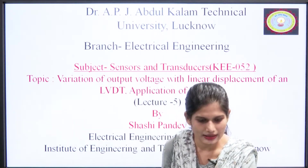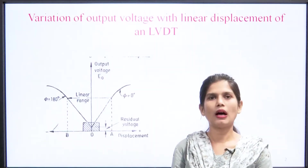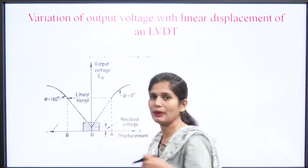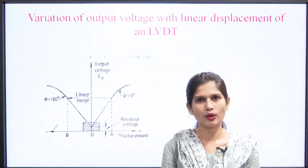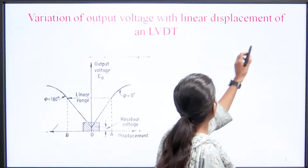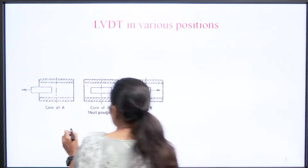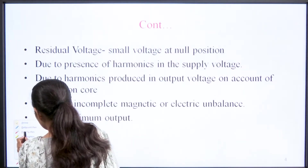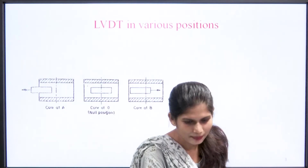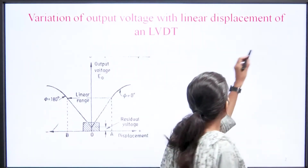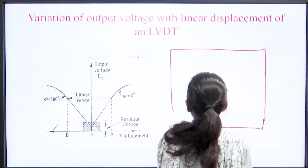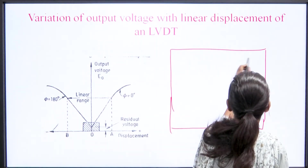In this lecture we are discussing about how our output voltage has been varied with respect to its displacement value. In the previous lecture we saw the construction diagram of LVDT and its working principle — how the construction of LVDT is done.